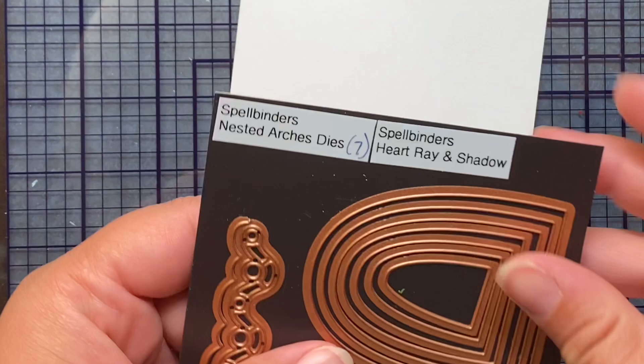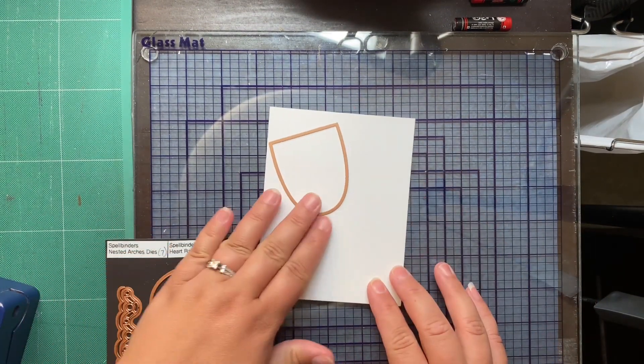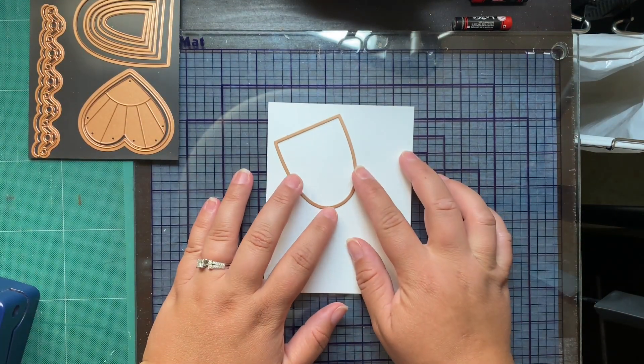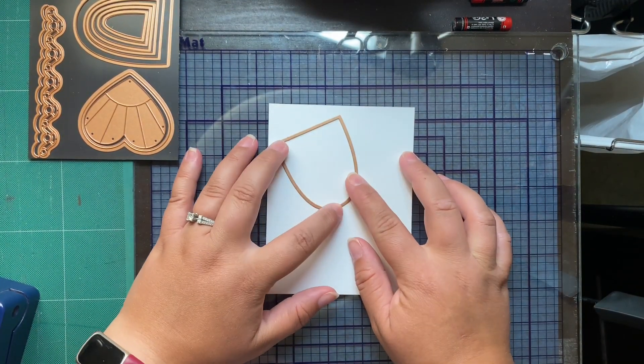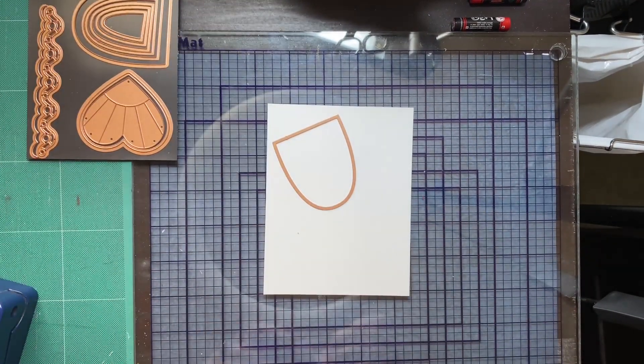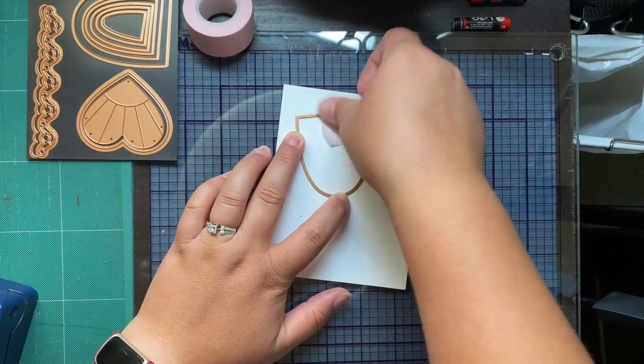Today we are going to use these nested arches dies from Spellbinders to create a shaker card. I am participating in a hop over on Instagram, and the theme for the hop is this week it is booze, coffee, or tea.